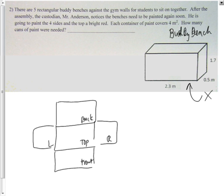Inside each face I'm going to put the dimensions. The top is 2.3 multiplied by 0.5, which is 1.15 square meters. The front is 2.3 meters long by 1.7 meters wide, so 2.3 times 1.7.